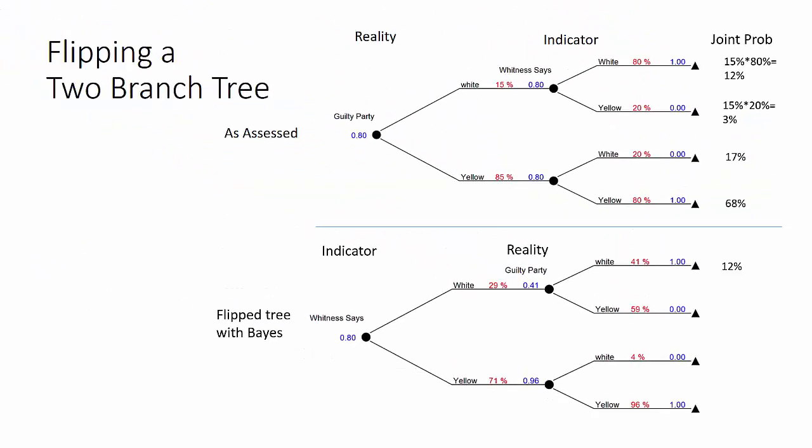Let's start by calculating the joint probabilities. This joint probability has to be the same as on the upper tree. So white, white, the guilty party is white. Witness says white is 12%. In the second branch the witness says white but the reality is yellow.